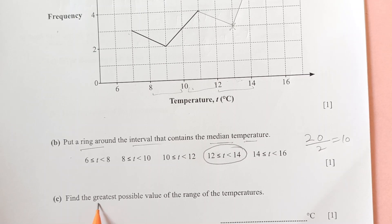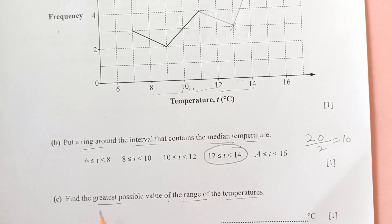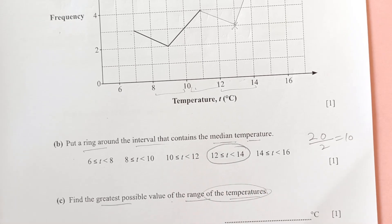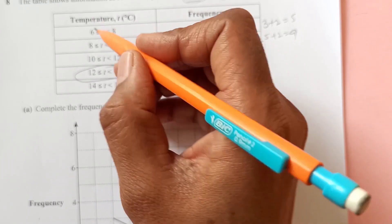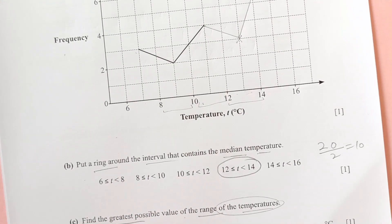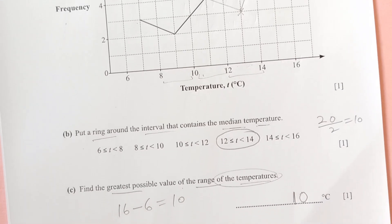Now, find the greatest possible value of the range of the temperatures. Greatest possible values of the range of the temperature. For that, you have to look into the column of the temperatures. So, temperature is here. The lowest value is 6. The highest is 16. 16 minus 6. So, that is 10. So, final answer is 10 for this.